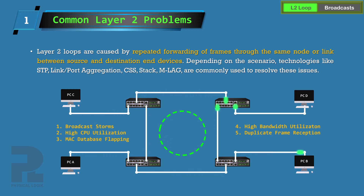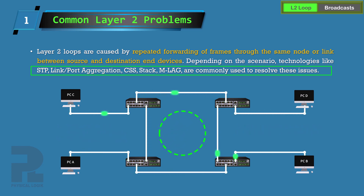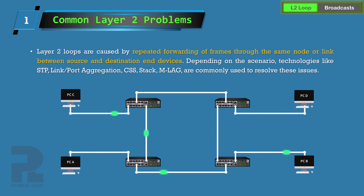Depending on the actual scenario, technologies like the spanning tree protocol, link or port aggregation, stacking, and MLag can be implemented to solve this problem. However, the layer 2 loop is outside the scope of this course.